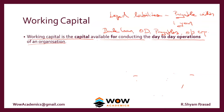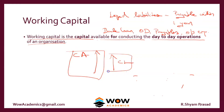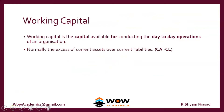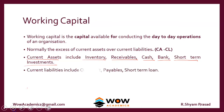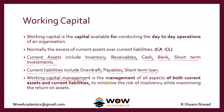The company should always have a sufficient amount of current assets to repay the current liabilities. Current assets should therefore be more than current liabilities. The excess of current assets over current liabilities is the working capital, also referred to as net working capital. Current assets include inventory, receivables, cash, bank, and short-term investments. Current liabilities include overdraft, payables, and short-term loans. Working capital management is the management of all aspects of both current assets and current liabilities to minimize the risk of insolvency while maximizing the return on assets.